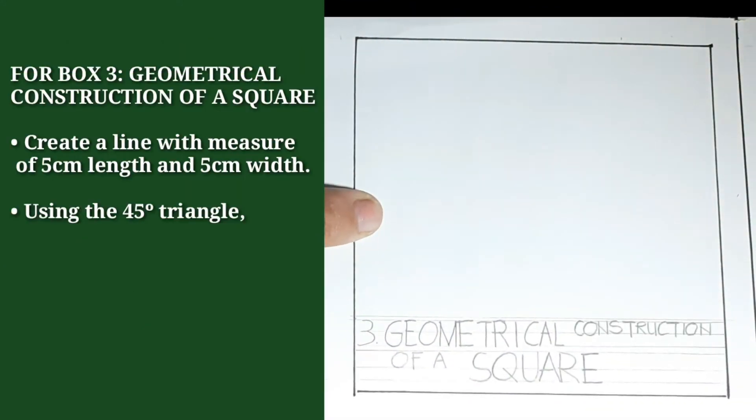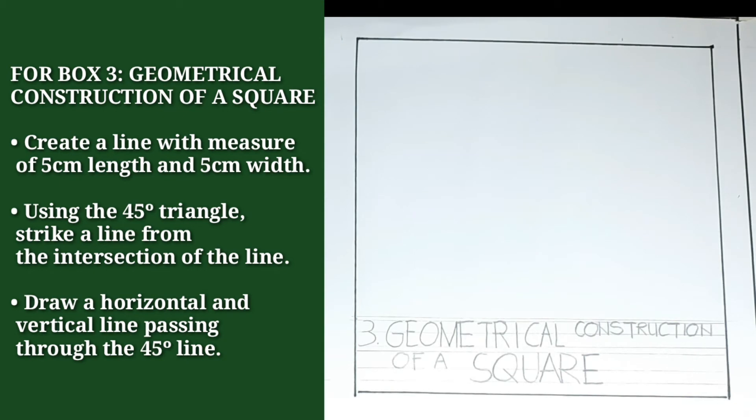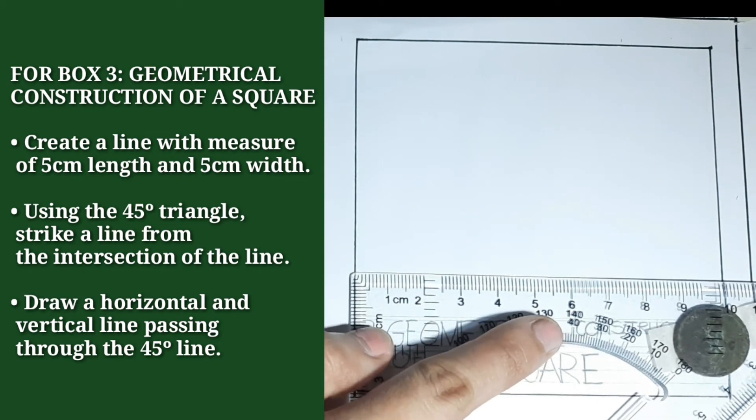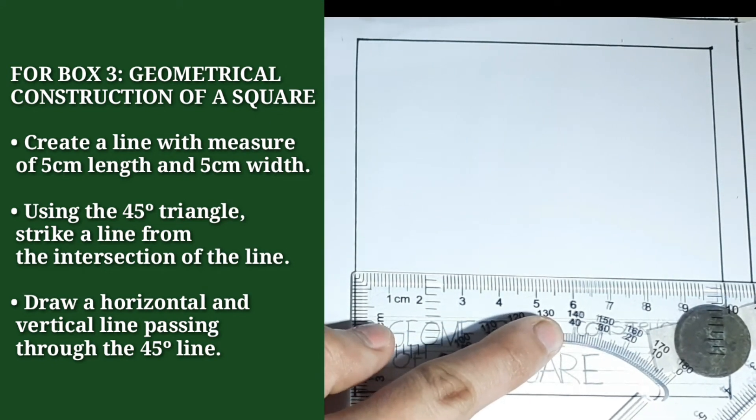For the third box, we will do the geometrical construction of a square. First, we will create a 5cm measure in our drawing area.